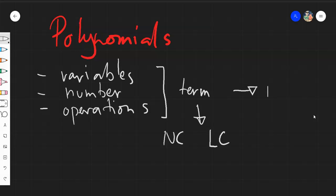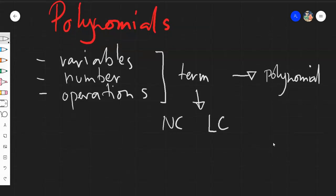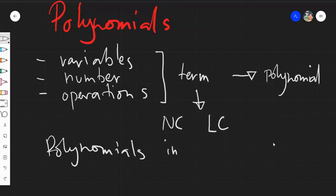When you combine different terms you will create a polynomial. Polynomials come in different categories when it comes to variables. For now we will be discussing polynomials in one variable — polynomials with only x.